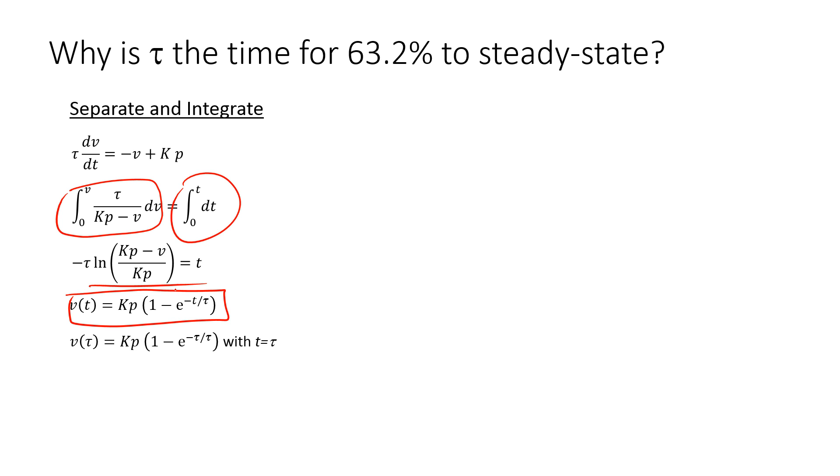That is my solution. So if time equals tau, then this is going to be e to the negative 1. So I have 1 minus e to the negative 1, and that's 0.63 tail. Or if I plugged in infinity for time, then this term right here, this is going to go to 1. And so I'm left with k times p.